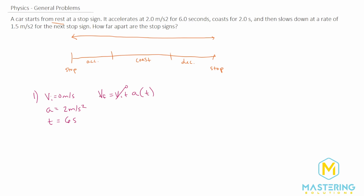The final velocity will help us figure out how far we went for this first section. So v_final equals two meters per second squared times six seconds, which gives us 12 meters per second for the final velocity at the end of section one.